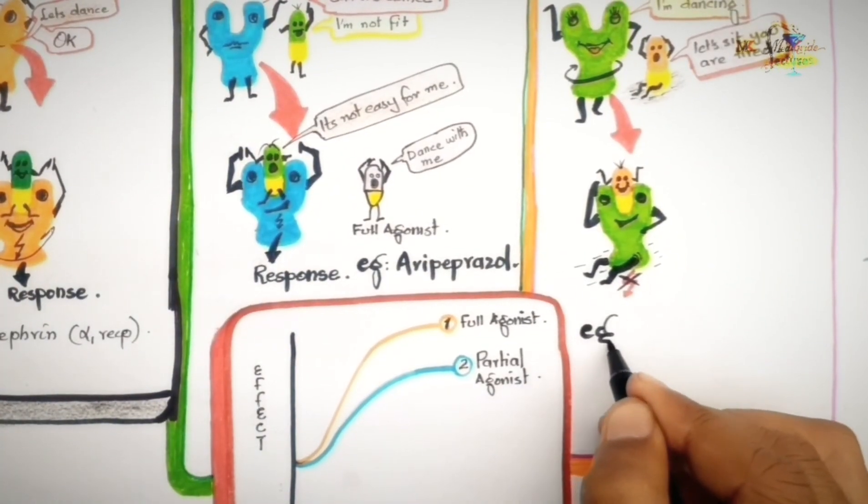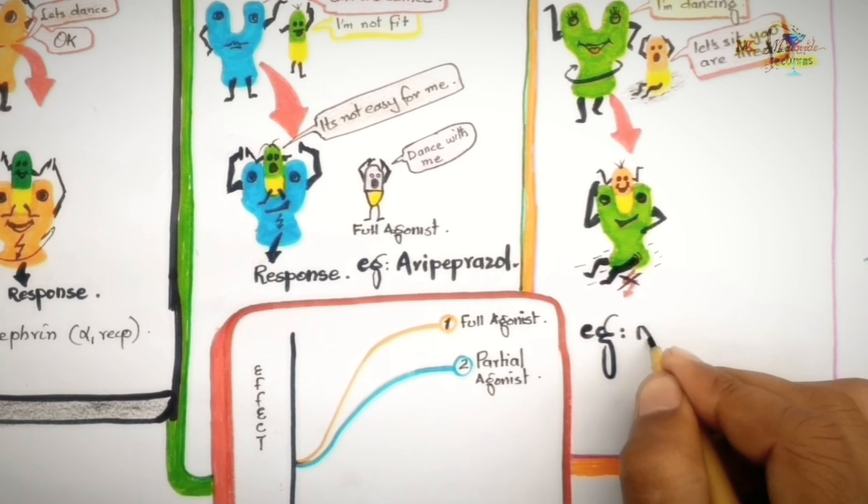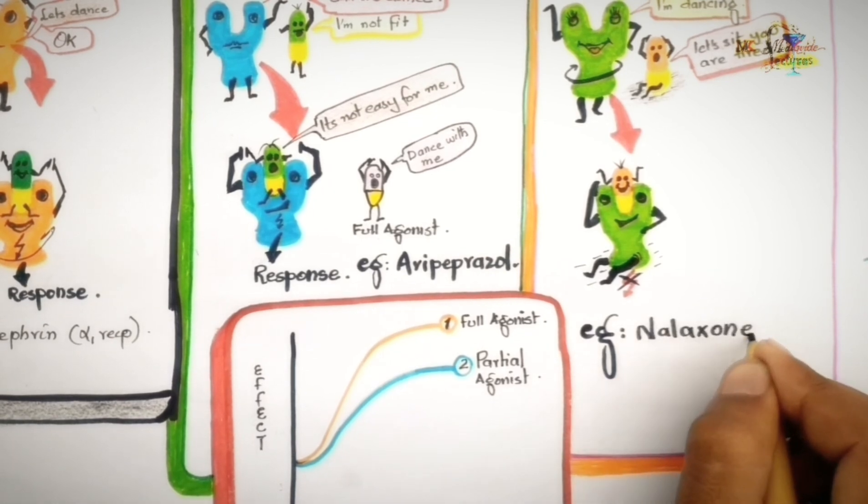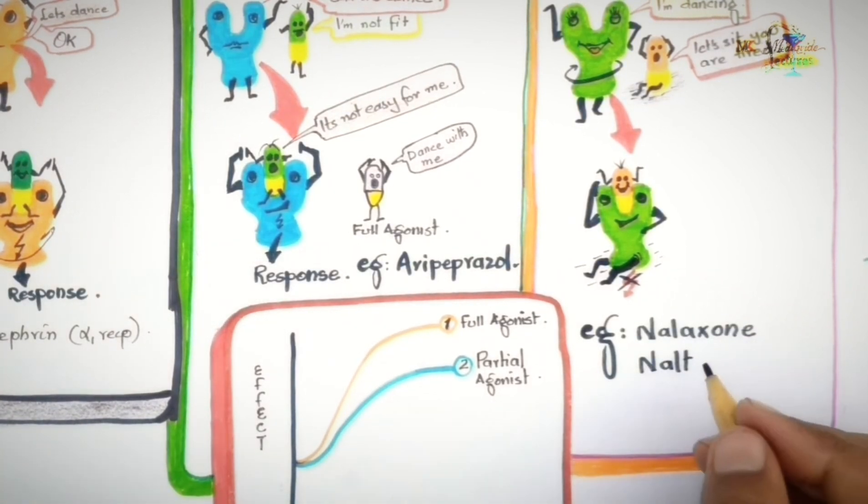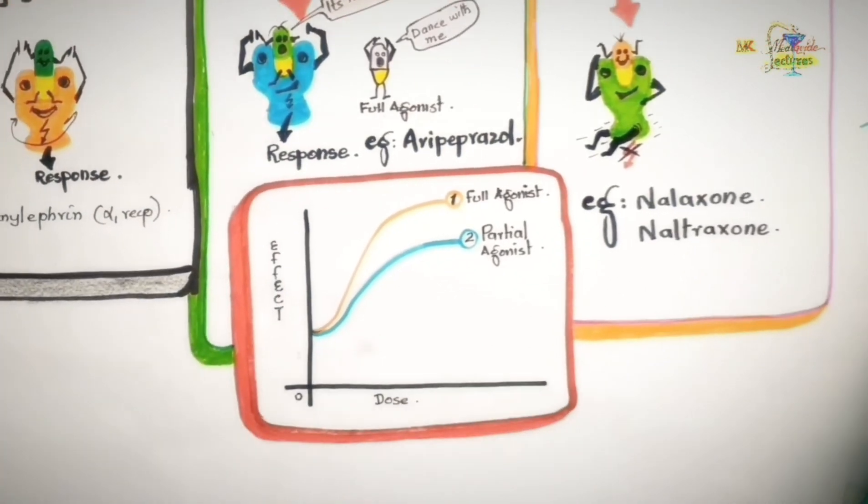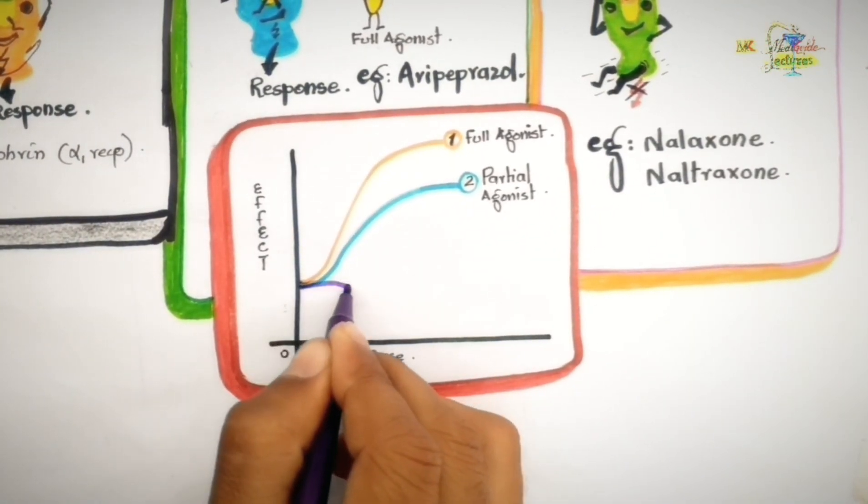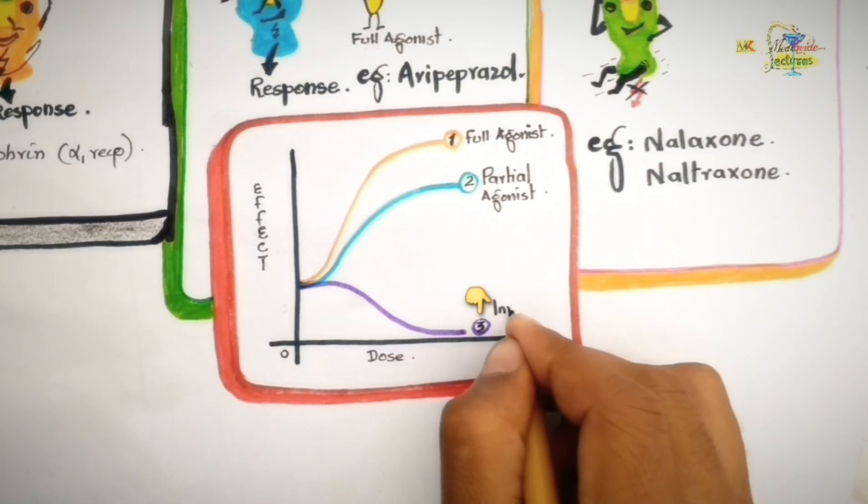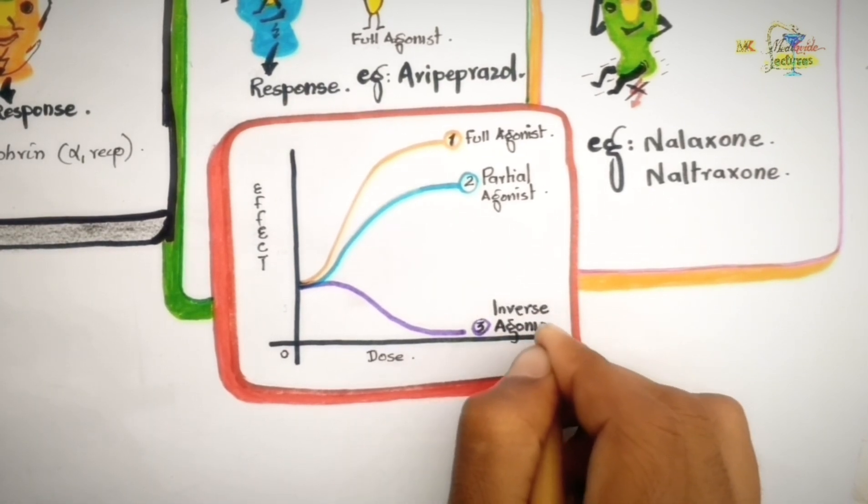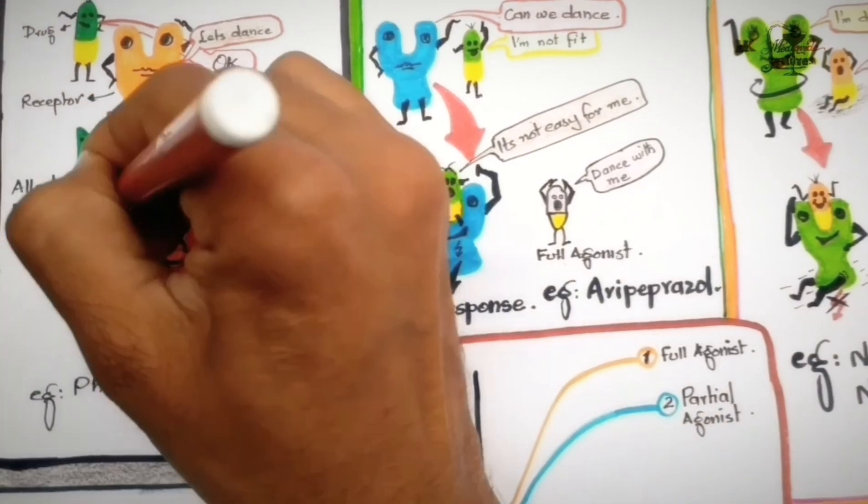Opioid receptors show this kind of behavior for which the inverse agonist is naloxone and naltrexone which are also antagonists at these receptors for opioids. The graphical representation of effects of inverse agonists are completely opposite that of full agonist and partial agonists.